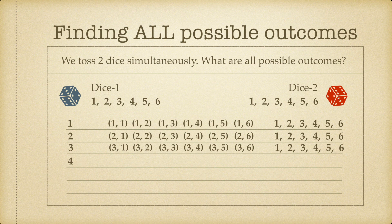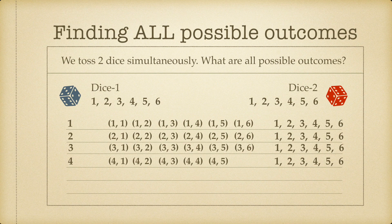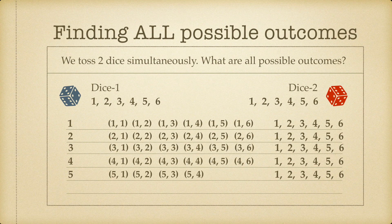When dice one shows four, the outcomes are (4,1), (4,2), (4,3), (4,4), (4,5), and (4,6). When dice one shows five, we have (5,1), (5,2), (5,3), (5,4), (5,5), and (5,6) — again six outcomes for dice two.